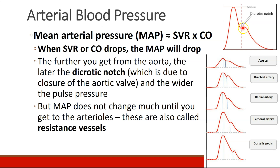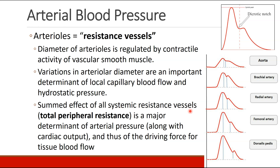As we move further and further from the aorta, the dicrotic notch occurs later. We also see that the pulse pressure becomes wider — that is, the difference between the systolic and diastolic pressures. But mean pressure, the average pressure, really doesn't change much until you get to the arterioles. The arterioles are the resistance vessels; their diameter is regulated by vascular smooth muscle activity, determining how much blood flow goes to capillaries of various organs. Together, all these resistance vessels play a major role in determining peripheral resistance and arterial pressure.